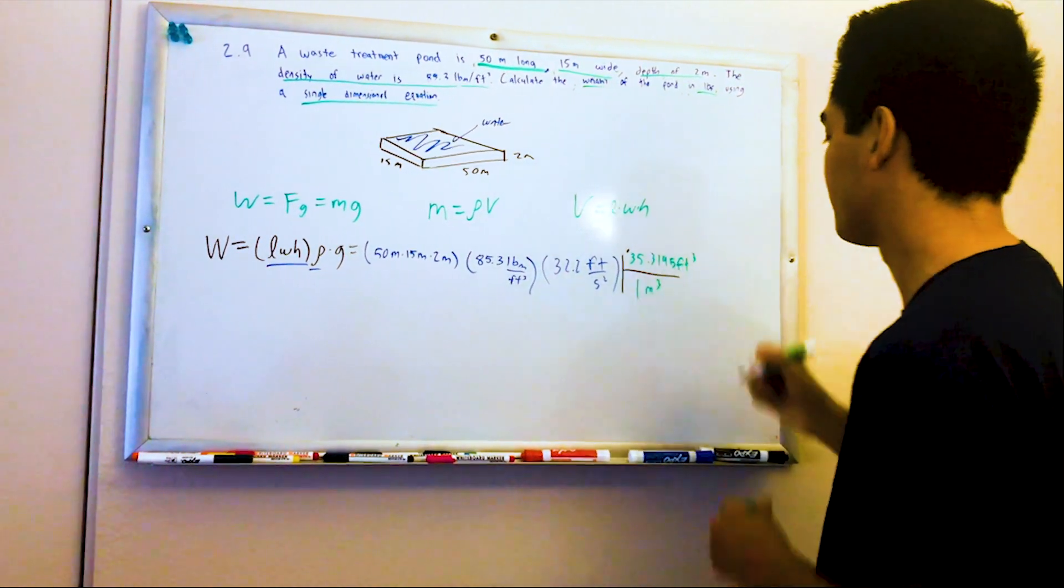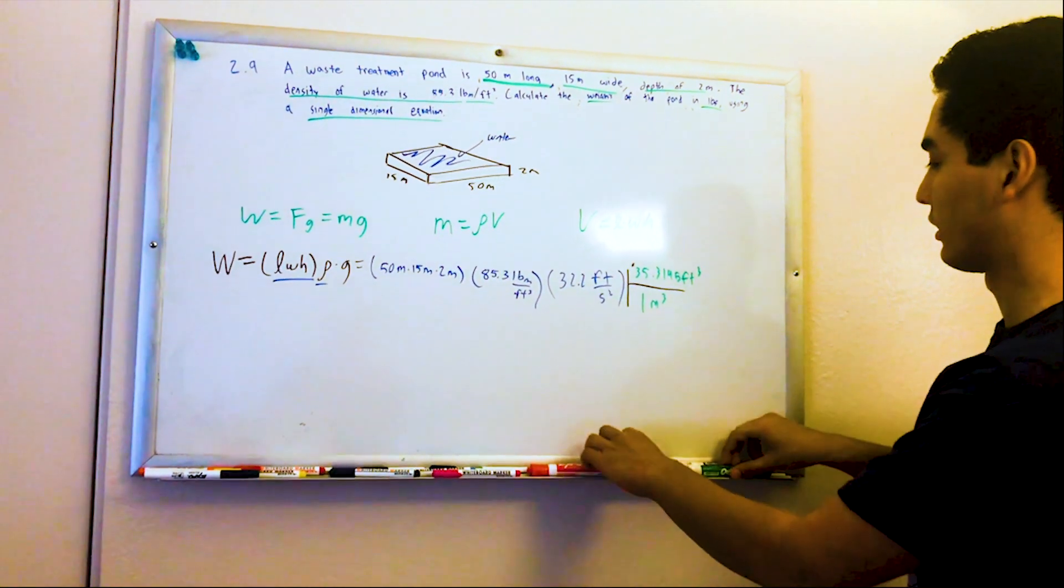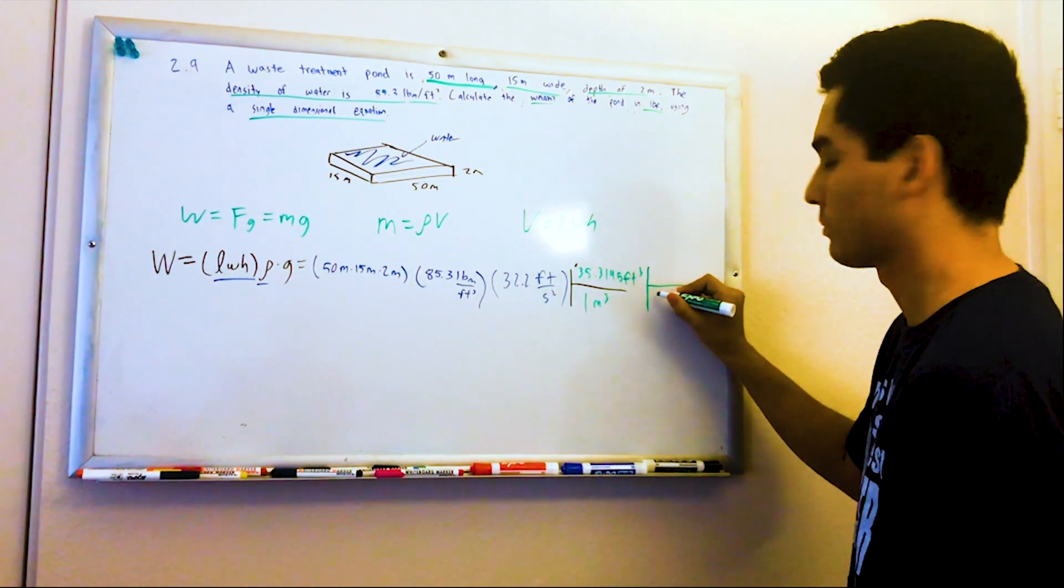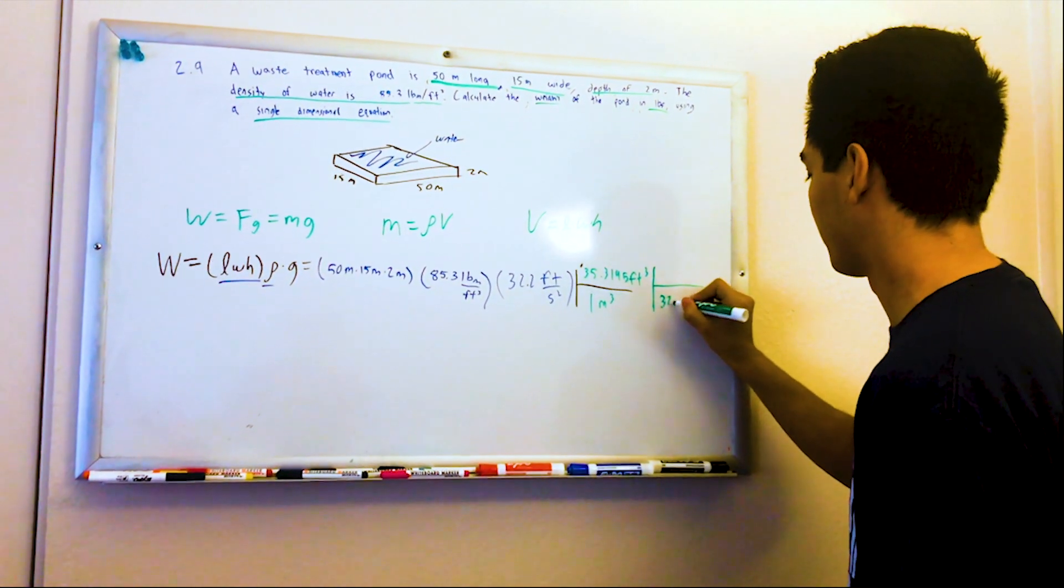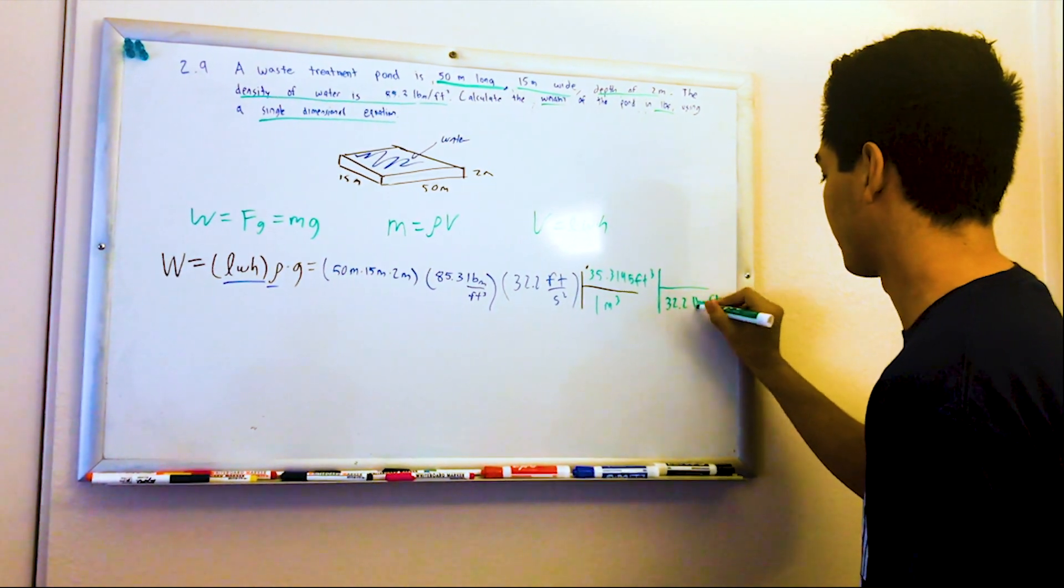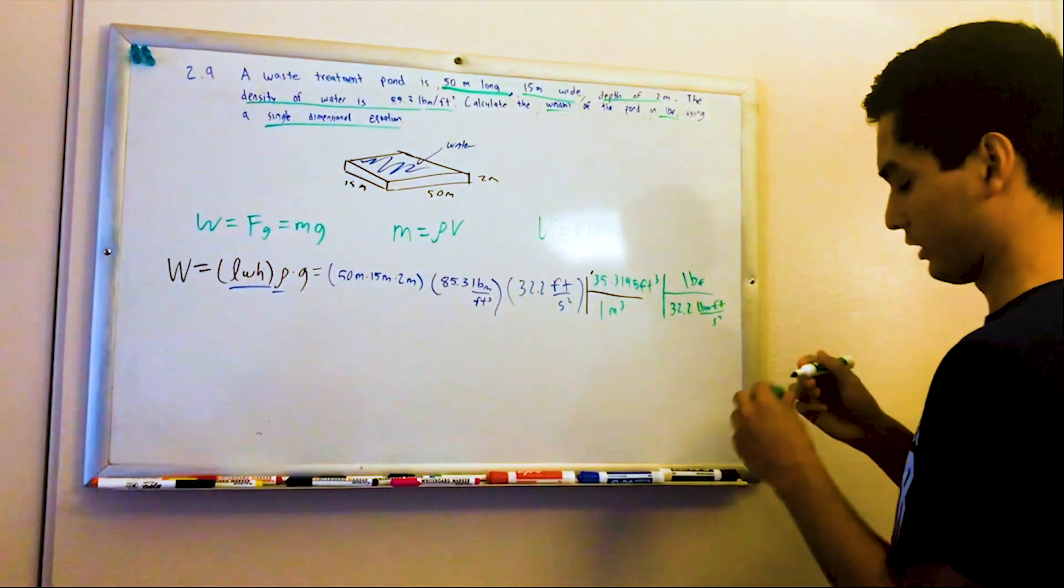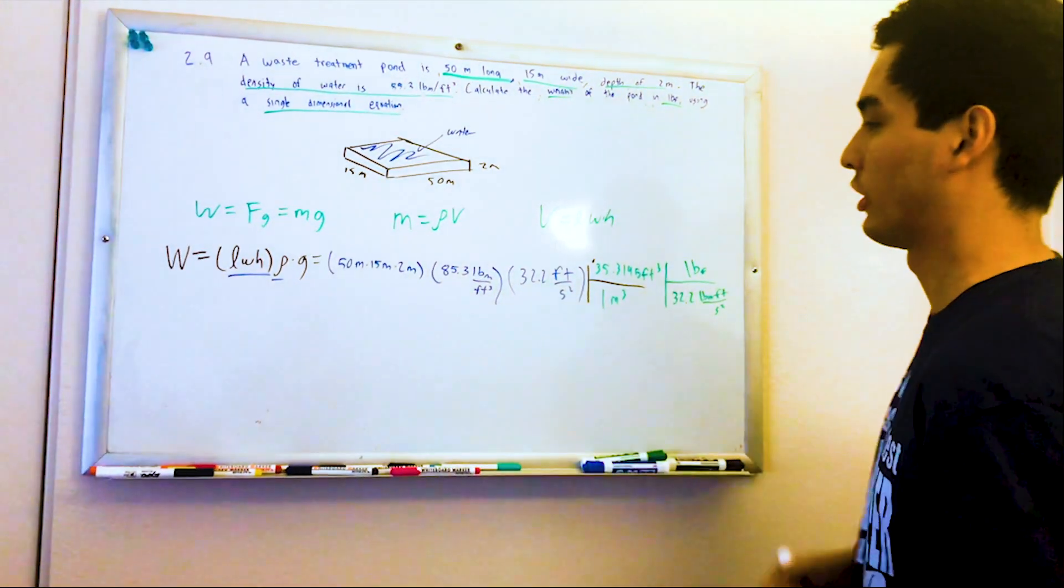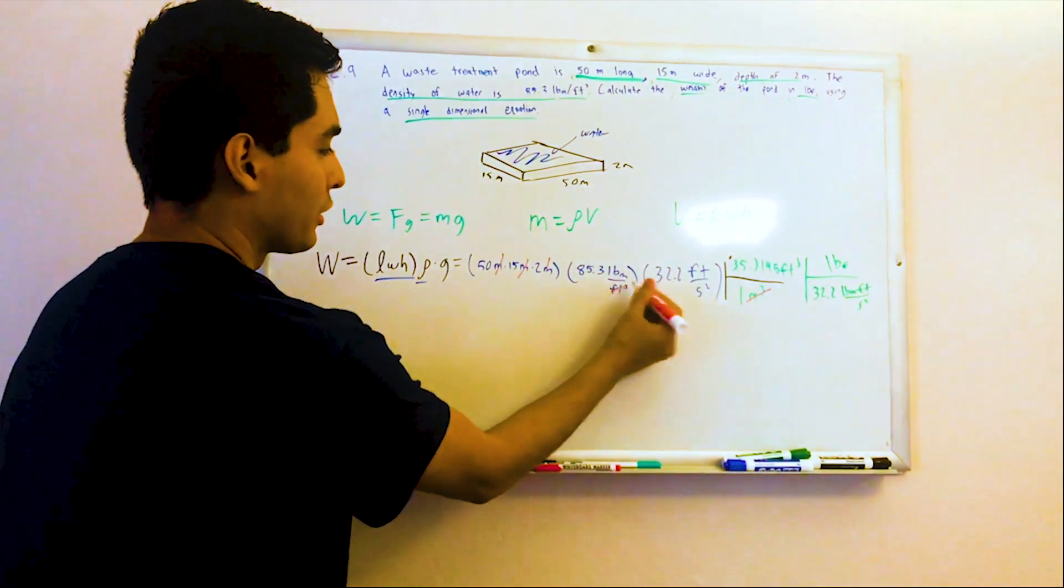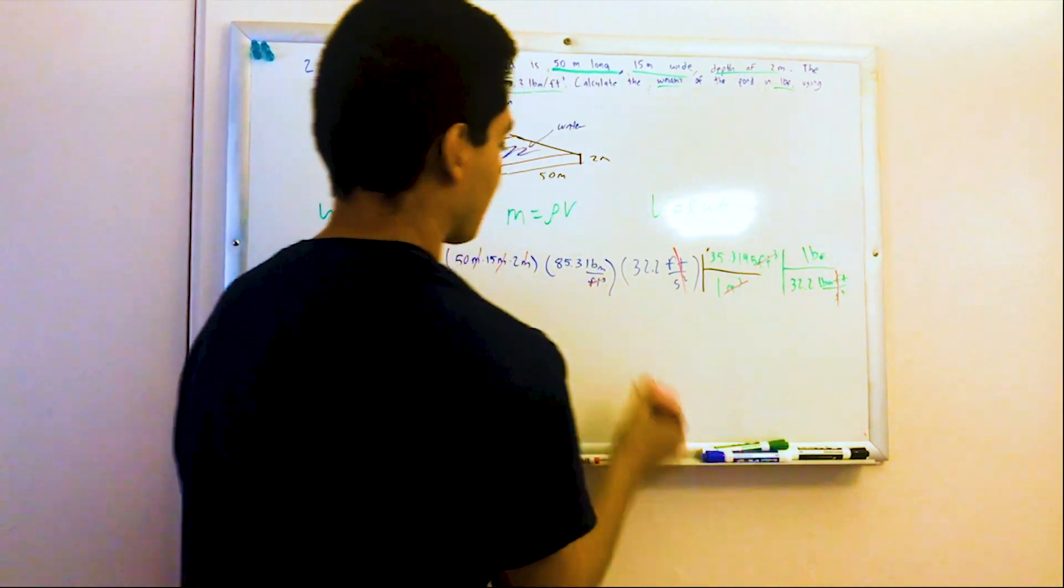And we know that the conversion for the American unit is, that's right, 32.2 pound mass times feet per second squared per pounds force. So we are indeed left with pounds force. So we can cancel out meters cubed with meters cubed, feet cubed with feet cubed, feet per second squared with feet per second squared, and pound mass, and we are indeed left with pounds force.